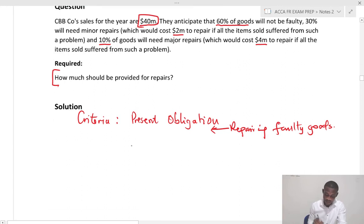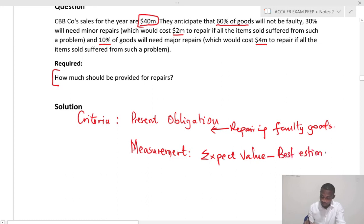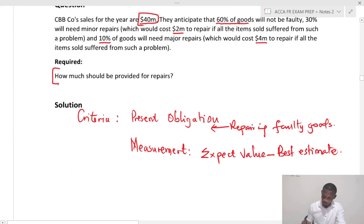Now the next question is, can we measure it? Is it probable? So can we measure, is it probable? Yes, it's probable based on history. And then can we measure, yes, we use what we call the expected value, which will give us the best estimate of value. Now how do you measure that best estimate? By looking at the probabilities.